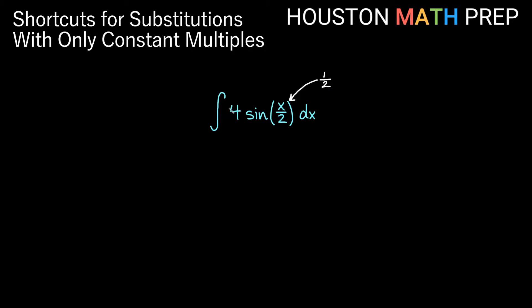So let's go ahead and think about, we'll keep the constant multiple of 4. We think next what is the antiderivative of sine? It is negative cosine. So we'll have negative cosine of x over 2.